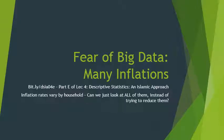Bismillahirrahmanirrahim. This is part E of lecture 4 on descriptive statistics and Islamic approach. In the last lecture we saw that inflation rates vary by household according to the composition of commodities that they purchase within their budget. In this lecture we consider whether we can look at all of these inflation rates together instead of trying to reduce them to one number called the inflation rate.